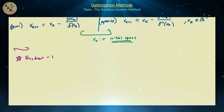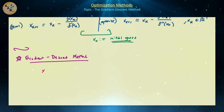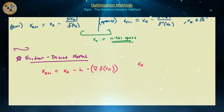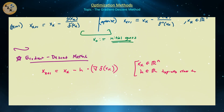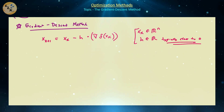The gradient descent method is given by the following iteration: x_{k+1} = x_k minus h times the gradient of f evaluated at x_k. Here x_k belongs to n-dimensional vector space, and h is a scalar, typically close to zero, similar to the step size in derivative approximations like forward, backward, or central difference. There is a requirement for the gradient descent method to converge.